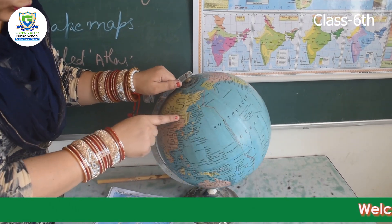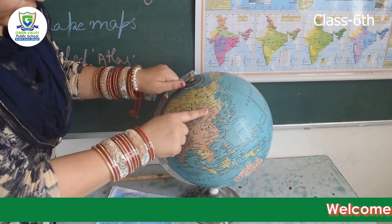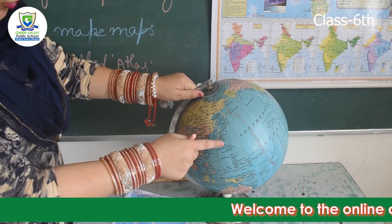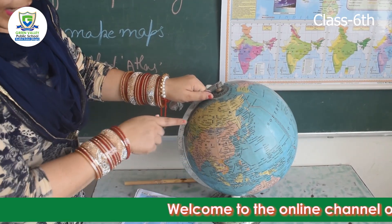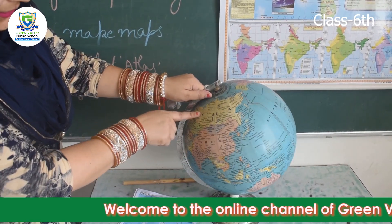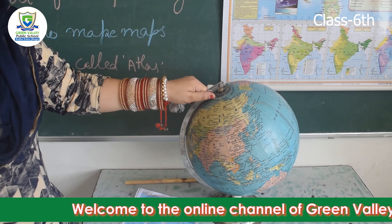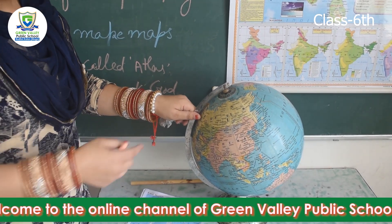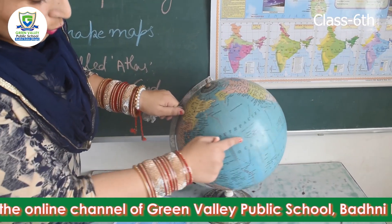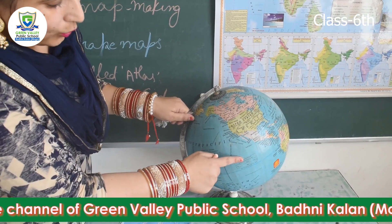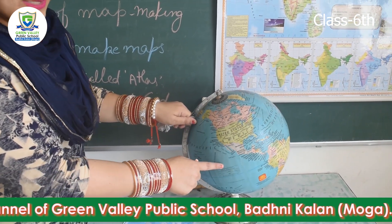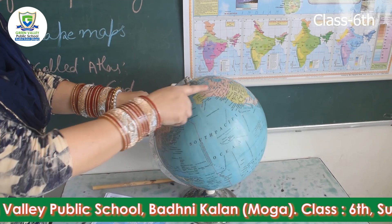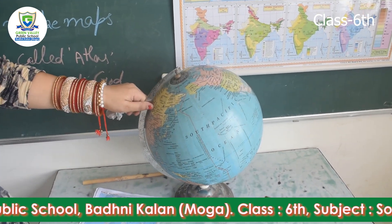Looking at the globe, you will see it is basically made with two colors: blue and yellow. Yellow color represents the continents — there are seven continents in the world — and blue color represents the oceans, rivers, and all water bodies.